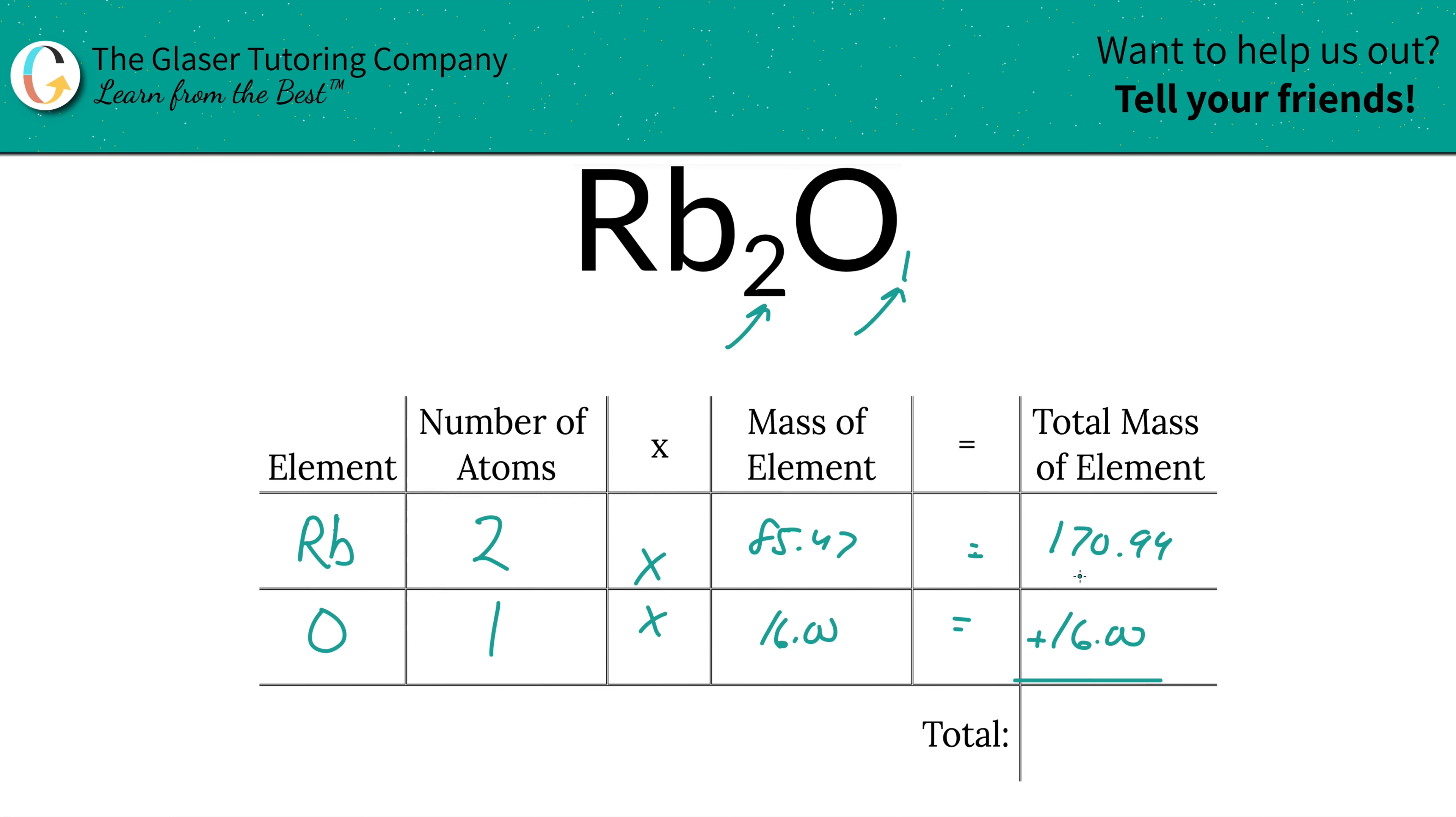And then all you have to do to find the total mass of the entire compound, just simply add this column up. And that's going to be 186.94. And the units here are grams per mole because we're finding molar mass. So there is to it. Now you know how to find the molar mass of rubidium oxide. Thanks for watching.